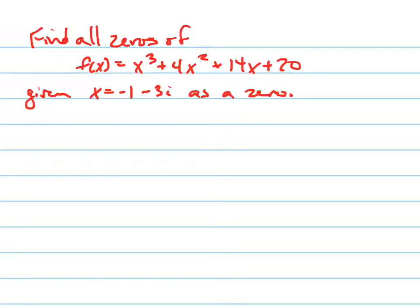They want us to find the zeros of f(x), this function right here, given that x = -1 - 3i is one of the zeros.